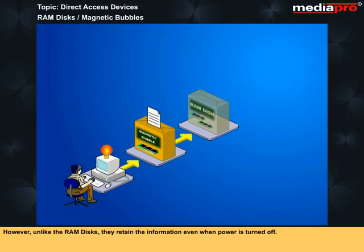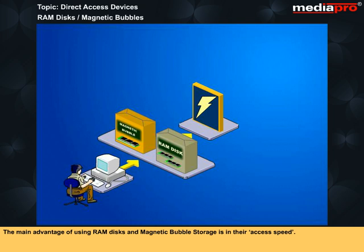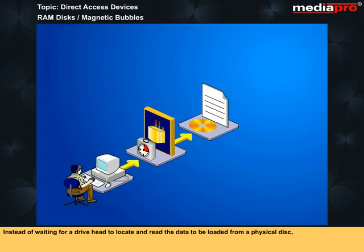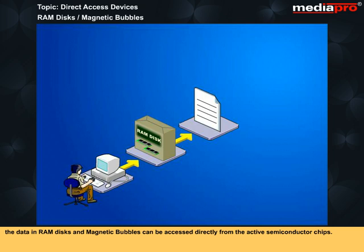The main advantage of using RAM disks and magnetic bubble storage is in their access speed. Instead of waiting for a drive head to locate and read the data to be loaded from a physical disk, the data in RAM disks and magnetic bubbles can be accessed directly from the active semiconductor chips.